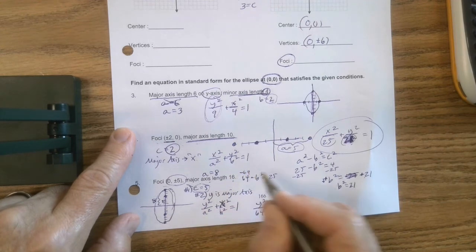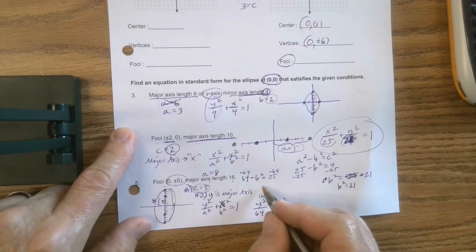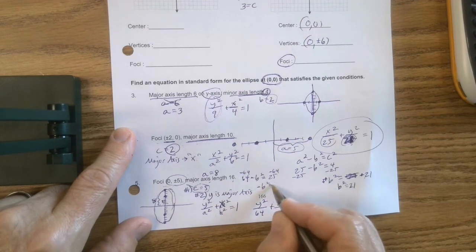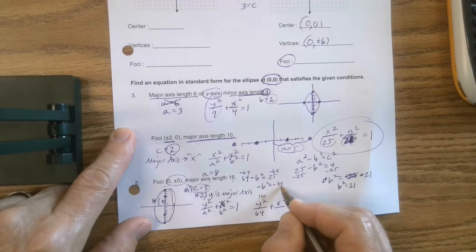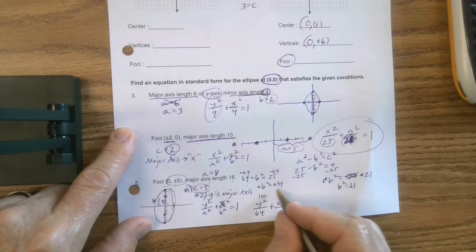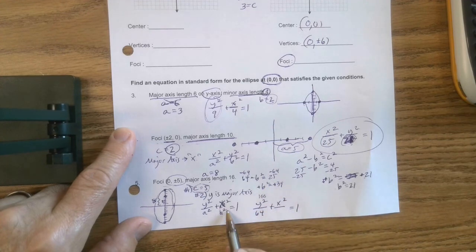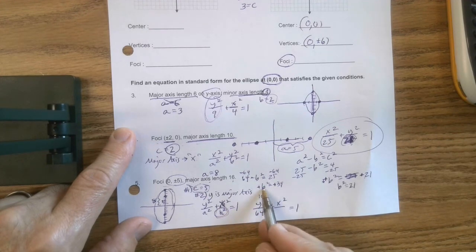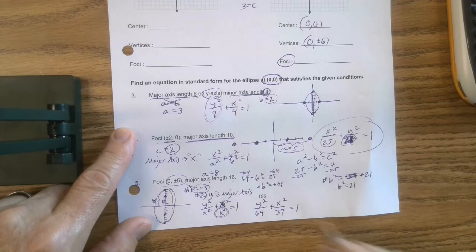So a squared would be 64 minus b squared equals c squared, which in this case would be 25, because c is 5. So I'm going to subtract 64, subtract 64, negative b squared equals negative 39. So I'd multiply both sides by negative. So I'm not going to take the square root because I want b squared down there. And I have b squared equals 39. So I'd be done.